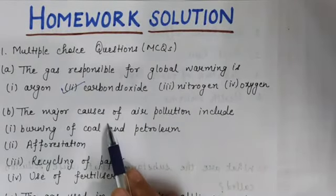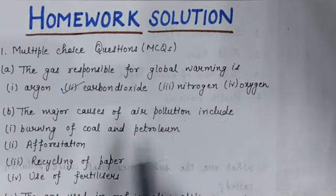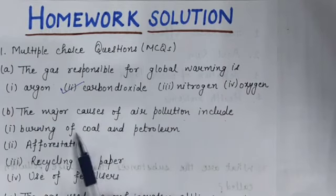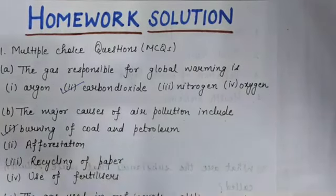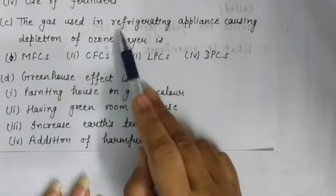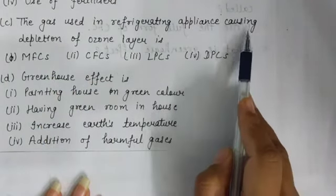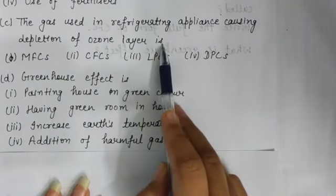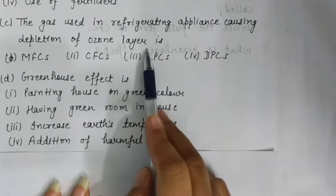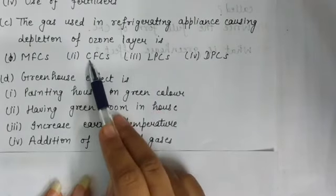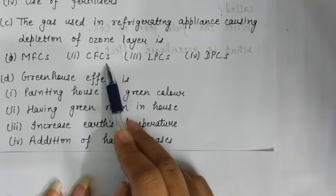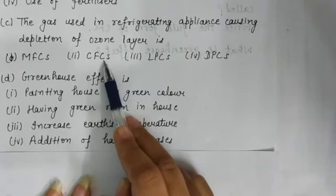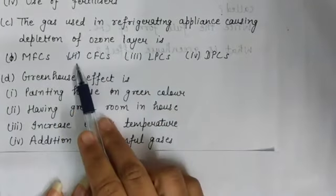Part B: the major causes of air pollution include burning of coal and petroleum — yes, this is a cause of air pollution, so the first option is correct. Part C: the gas used in refrigerating appliances causing depletion of the ozone layer is chlorofluorocarbon, whose short form is CFC — C for chloro, F for fluoro, C for carbon. Chlorofluorocarbon is responsible for depletion of the ozone layer, so the second option is correct.